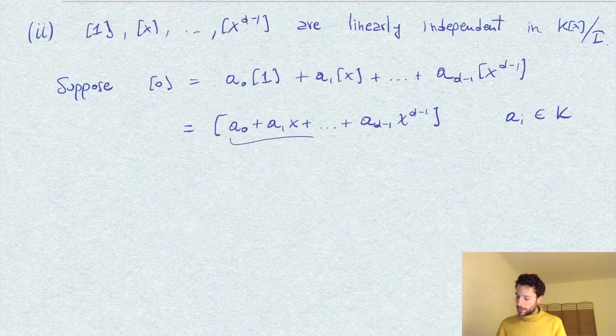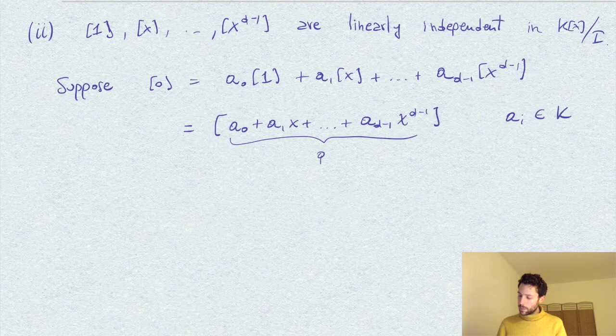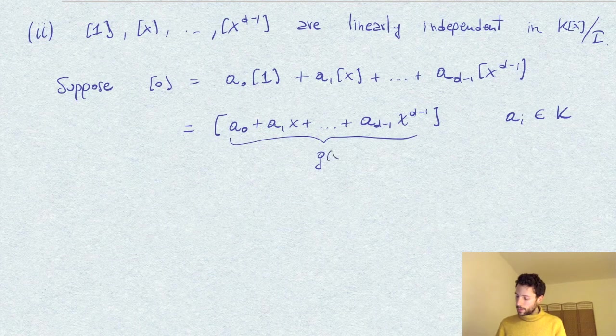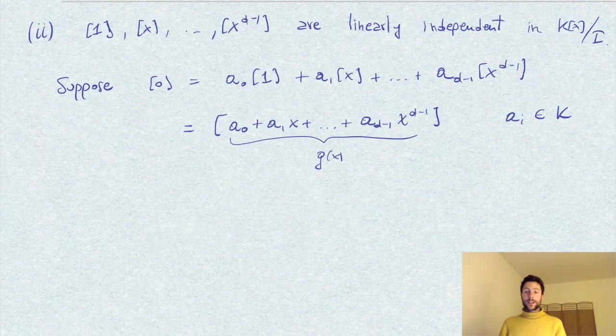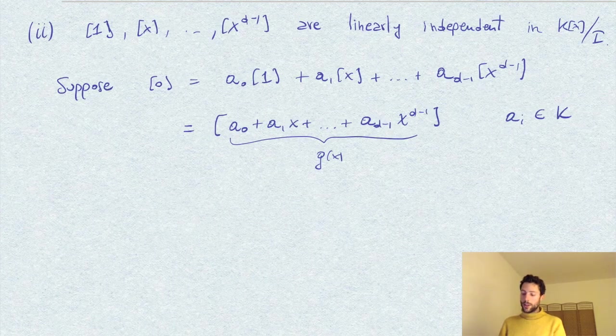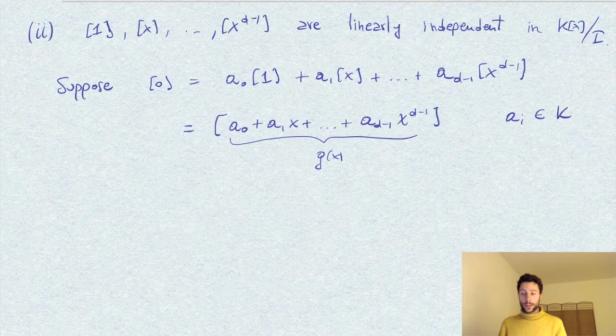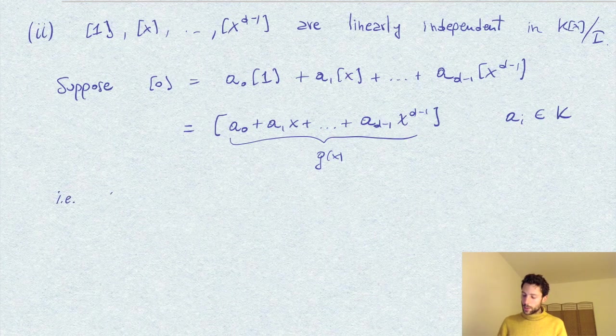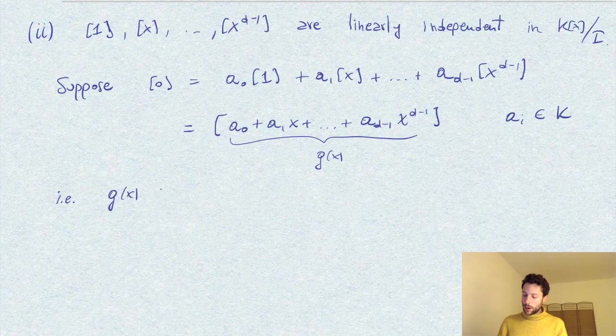Let's give it a name—let's call it g(x). So the class of g equals the class of 0 in the quotient. In other words, this means g(x) is in the ideal I.